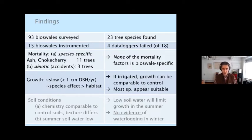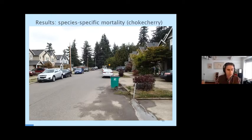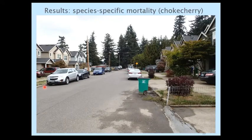Here is an example of mortality. This was in Portland, Oregon — you can't see the chokecherries because they all got black knot disease and were all removed. You can see the sad stem sprouts. This was the case whether they were in street tree basins or in bioswales across the street. They all got sick; they all got removed. It didn't have anything to do with the bioswale — it was simply an issue with this tree species.